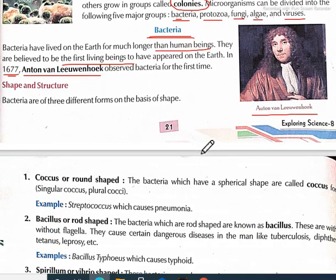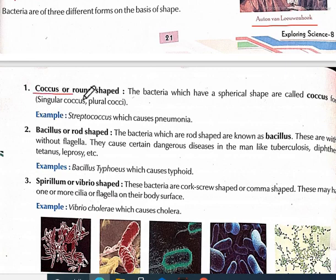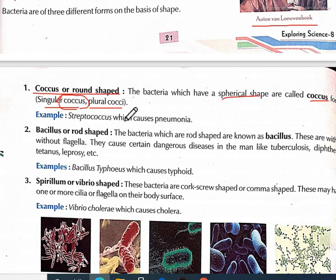Let's see the characteristics of bacteria — their shape and structure. Cocci are round-shaped bacteria. Bacteria which have a spherical shape are called cocci (singular: coccus). When there is one spherical bacterium we call it coccus. For example, Streptococcus, which causes pneumonia.